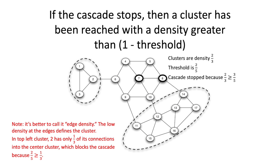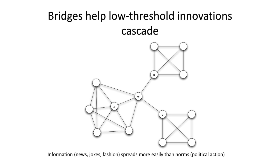Regarding bridges: a bridge with lower edge density is what a cascade needs to cross. Low-threshold innovations — like a funny joke or meme — can spread across bridges more easily, whereas people are more hesitant to share something more normative like political beliefs. You can expect a bridge to continue a cascade for things with a lower threshold.